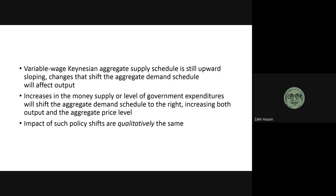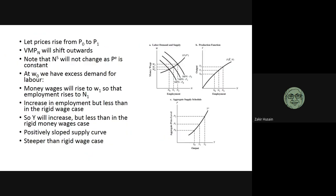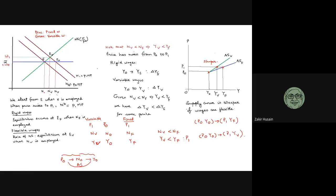So we can see that if we extend the Keynesian model and relax the assumption of downward wage rigidity, the aggregate supply schedule is still upward sloping. The only difference is that the supply function is going to be steeper than the rigid wage case. This is the variable case and this is the fixed or rigid case — that is the only difference: the slope.